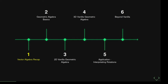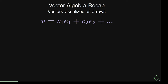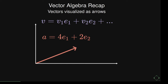Let's start with a very short recap of vector algebra. Usually you can write vectors like this — you have basis vectors denoted by E, so E1 and E2 in two dimensions, and then you have coefficients for each basis vector. You can visualize these as arrows from the origin — for example, a vector that goes 4 in one direction and 2 in another, split into a 4E1 part and a 2E2 part.